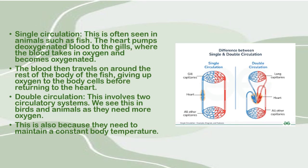Moving on to single circulation, which is what we see in animals such as fish. The heart pumps deoxygenated blood to the gills, where the blood takes in oxygen and becomes oxygenated. The blood then travels around the rest of the body of the fish, giving up oxygen to the body cells, before returning to the heart.